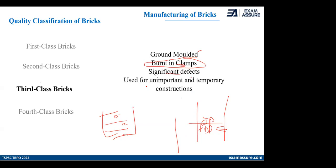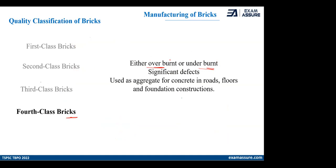Since third class bricks are burned in clamps they have significant defects, and the uses are usually for unimportant and temporary construction. You can see the basic differences — second class bricks were used where brick masonry is to be plastered; third class is used where your work is temporary and unimportant, or if you are not expecting it to be used for a very long period.